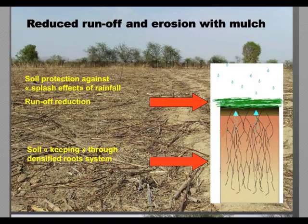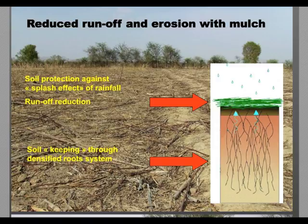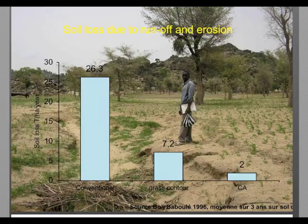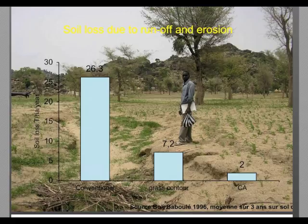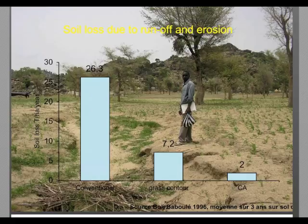How is runoff or erosion reduced by mulch? First, soil is protected against the splash effects of rainfall, and soil particles are also protected against transportation due to a densified root system resulting from crop rotation and association. The next picture shows flooding caused by extra rainfall and a wet slope. When the slope allows water to move from higher to lower points, runoff and erosion occur.